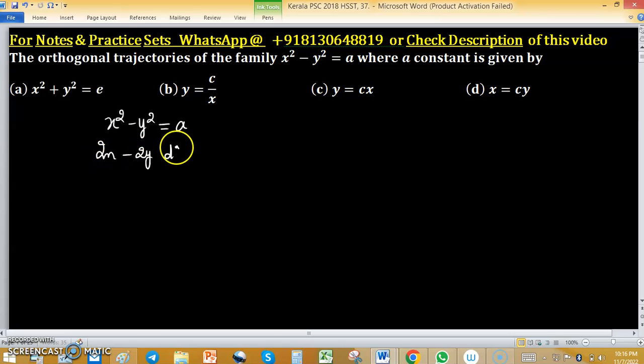2x minus 2y dy over dx equals to 0. Minus 2y dy over dx equals to minus 2x. Cancel out by minus 2. We have y dy over dx equals to x upon y.